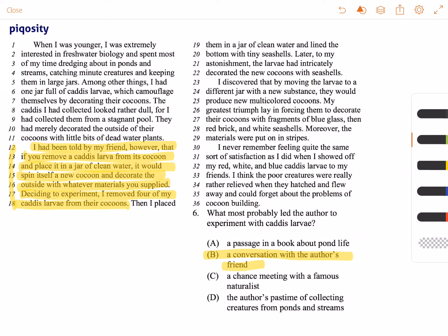Taking a look at the other answer choices, A: a passage in a book about pond life, that's not anywhere in this passage so we can knock that one out. C does the same thing as A: a chance meeting with a famous naturalist, that's nowhere in the passage either, so we can knock that out.